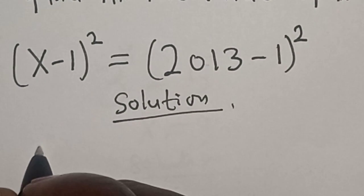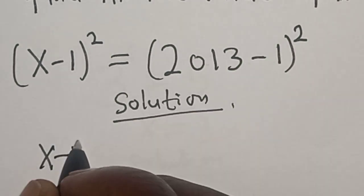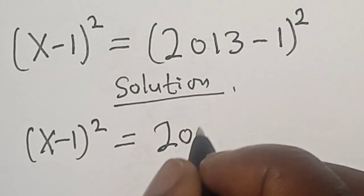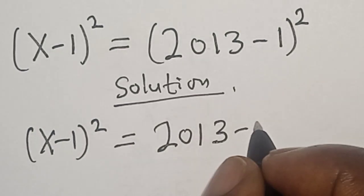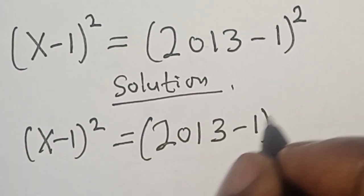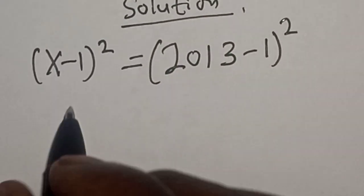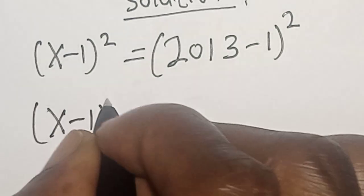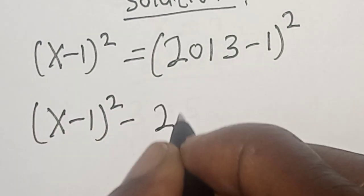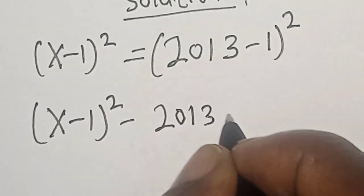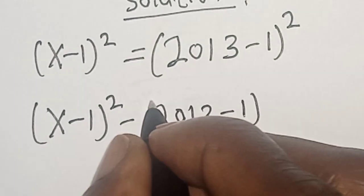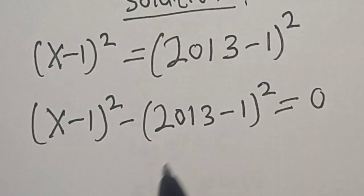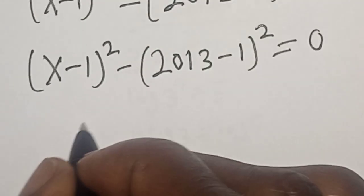We have the given equation: (x - 1)² is equal to (2013 - 1)². This is the same thing as (x - 1)² minus (2013 - 1)² is equal to zero. This is a difference of two squares.